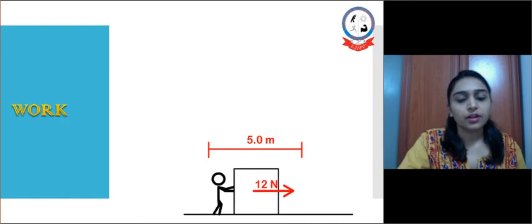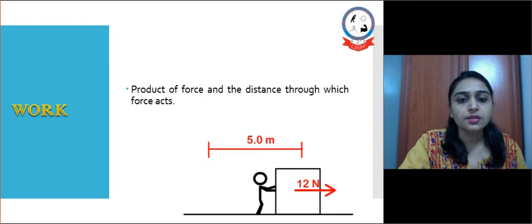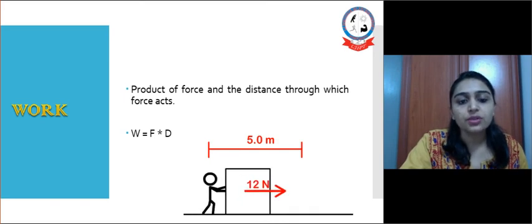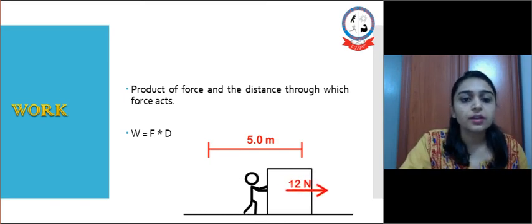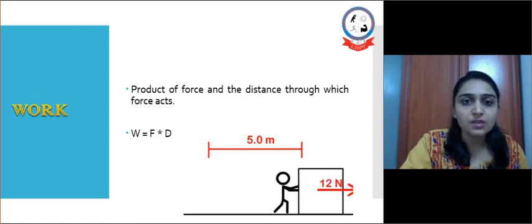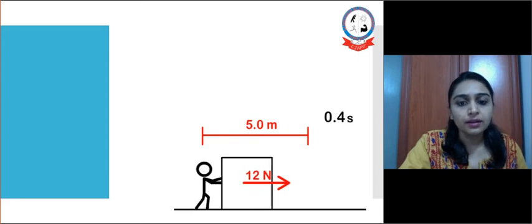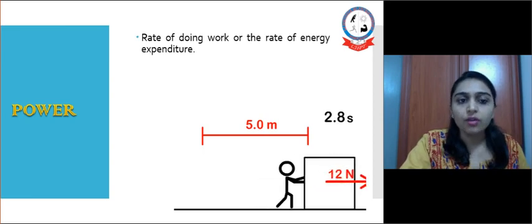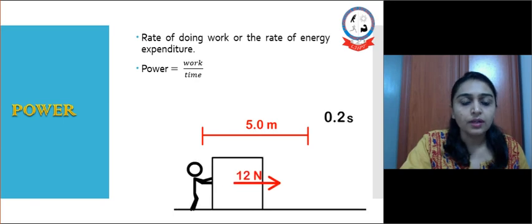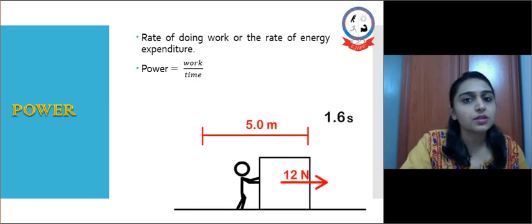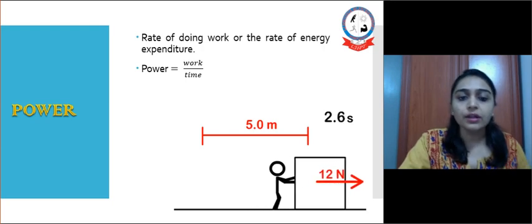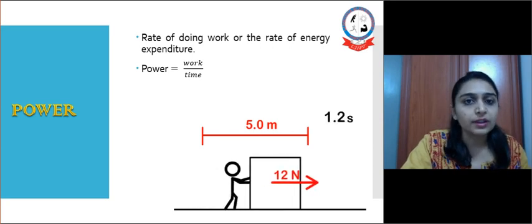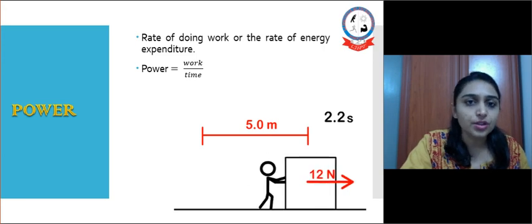Next is work. Work is the product of force and the distance through which the force acts. For example, if a 12-newton force is applied over 5 meters, the product is the work done. Work is measured in joules. If we incorporate time, it becomes power. The rate of doing work, or rate of energy expenditure, is known as power, expressed as power equals work divided by time, and is measured in joules per second.